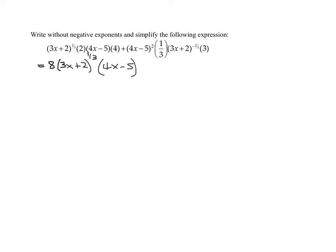And now we need to add the second term. So let's take a look at our second term. Here it is. And notice I have a one-third times a three. So I'm going to simplify that to start with. So I have one-third times three over one. The threes reduce. And what do I get left with? I just get my four x minus five to the second power times three x plus two to the negative two-thirds power.